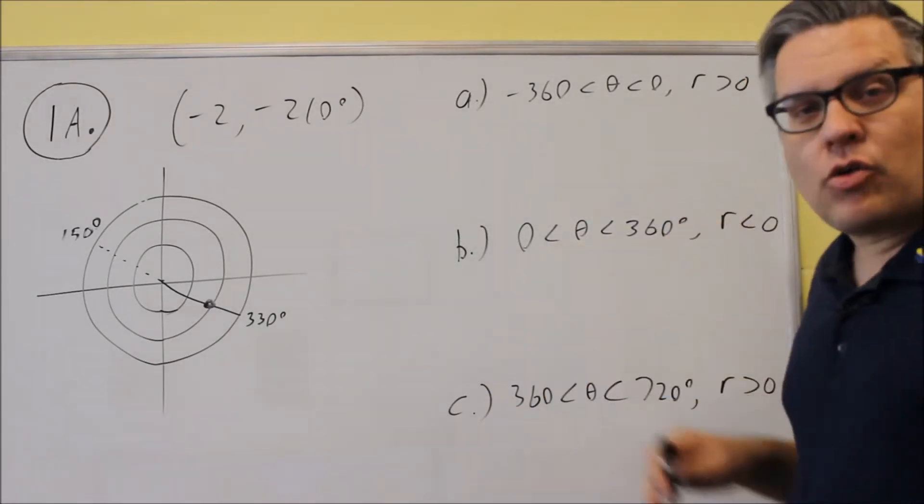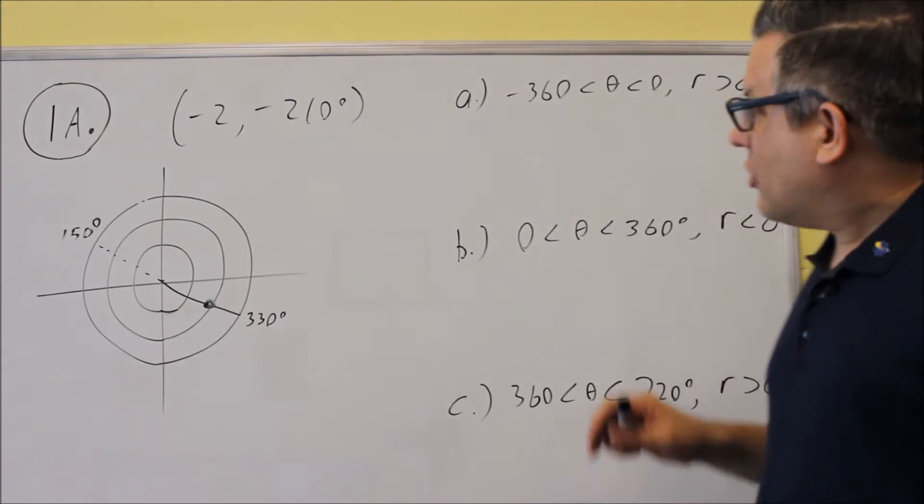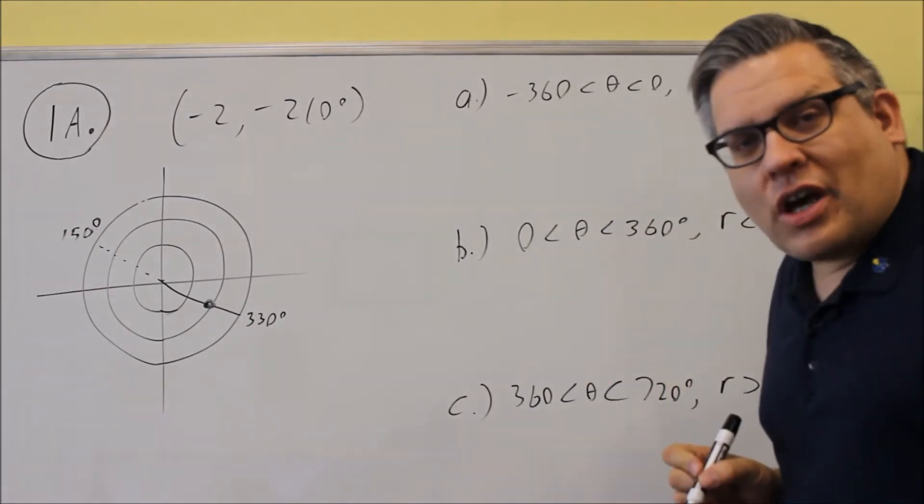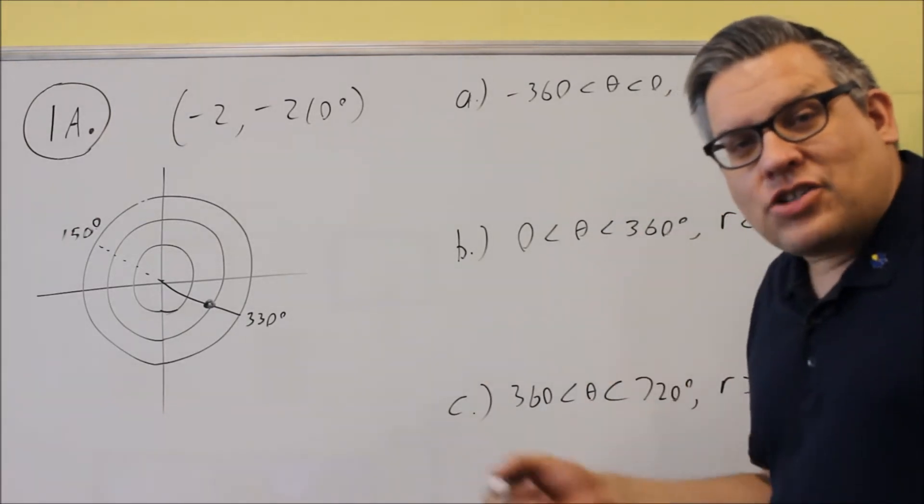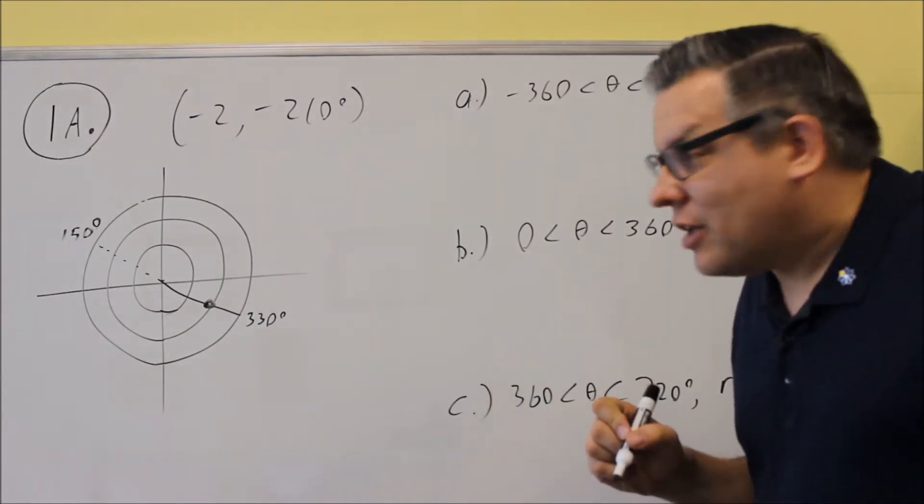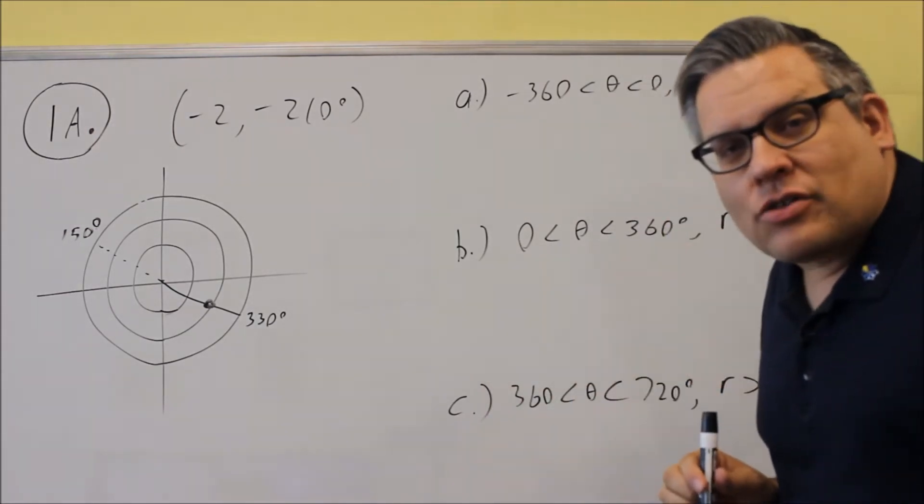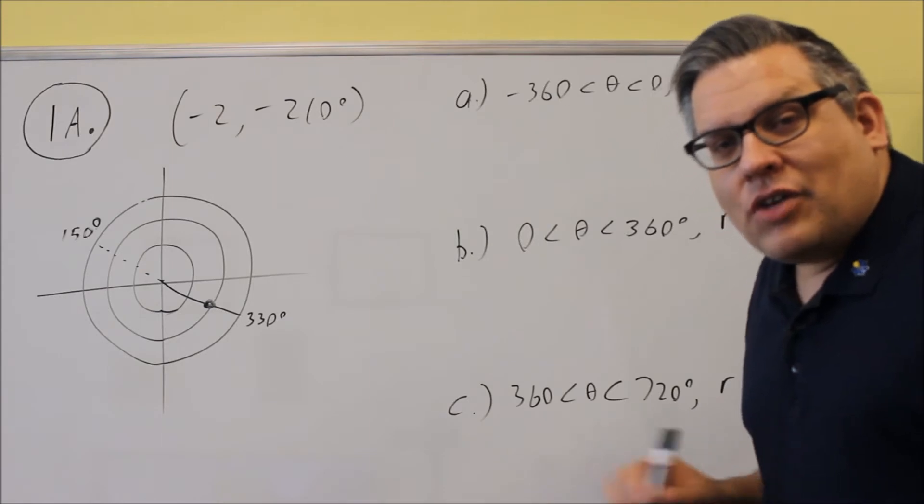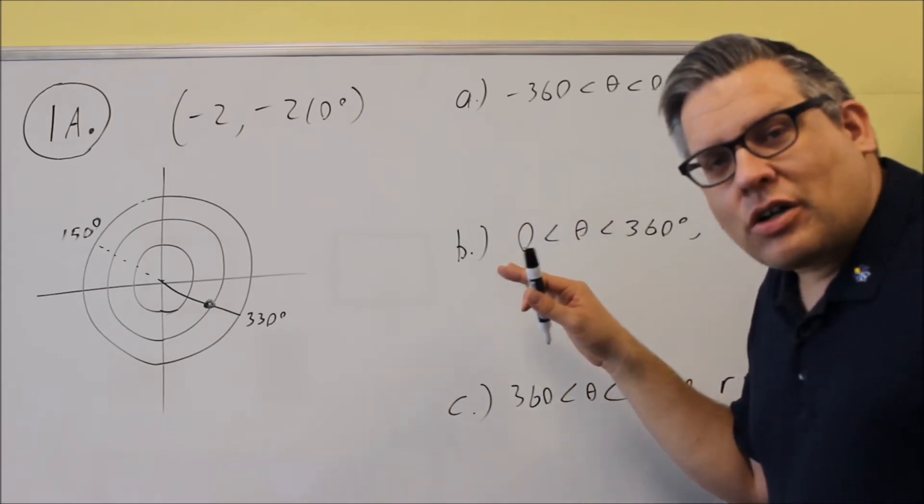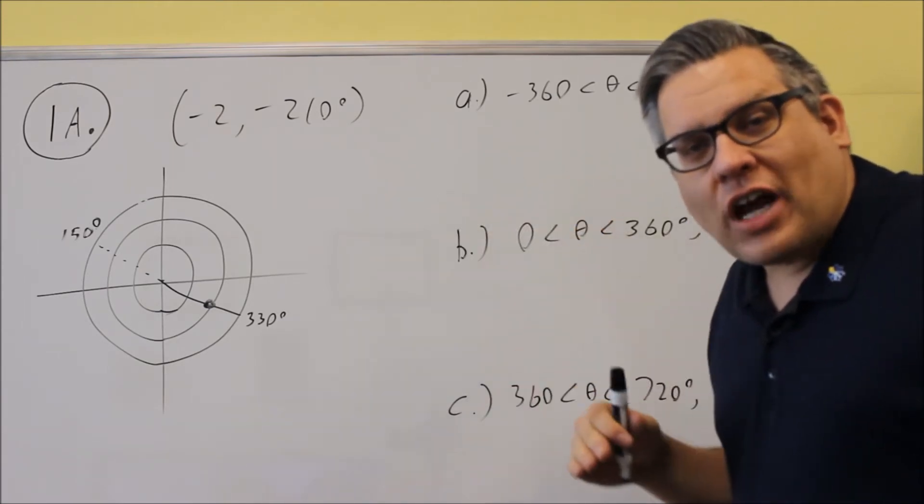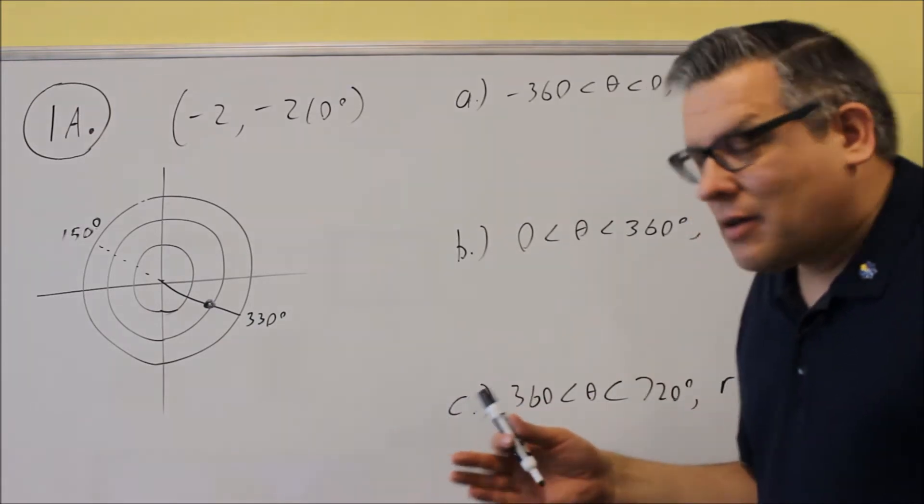Next, we want to find equivalent points here. So the way this works is that if you are changing the sign of the R, make an R positive or negative, that means that you're going to add or subtract 180. If you don't want to change the sign of the R and keep it the same, then you're adding or subtracting 360.